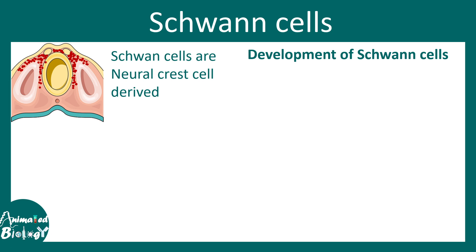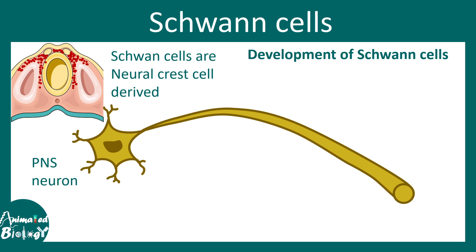In contrast to oligodendrocytes, Schwann cells are not produced from neuronal progenitor cells — they are produced from the neural crest cells. From neural crest cells, the Schwann cell progenitor or precursor is first formed, which begins attaching and docking to the axons.